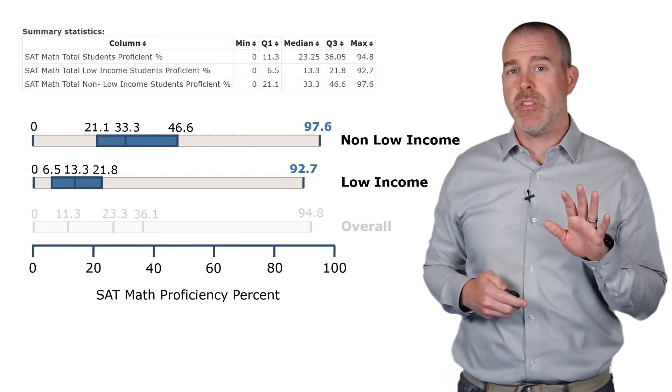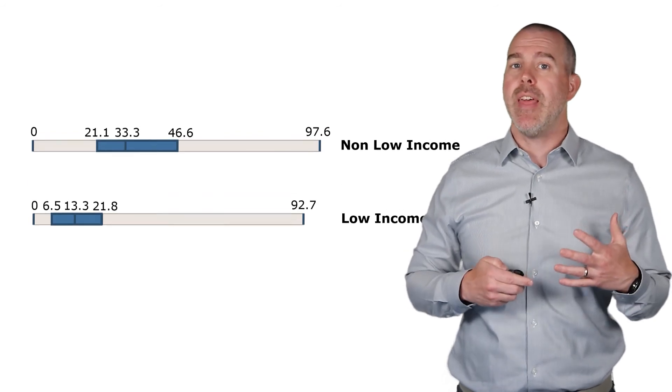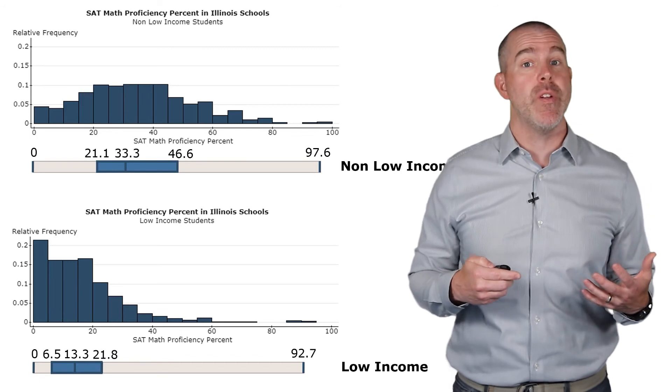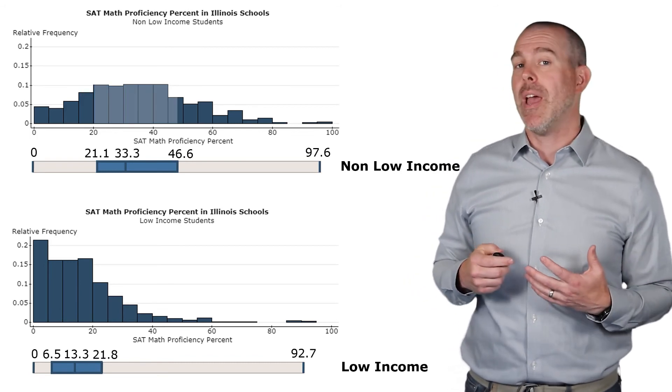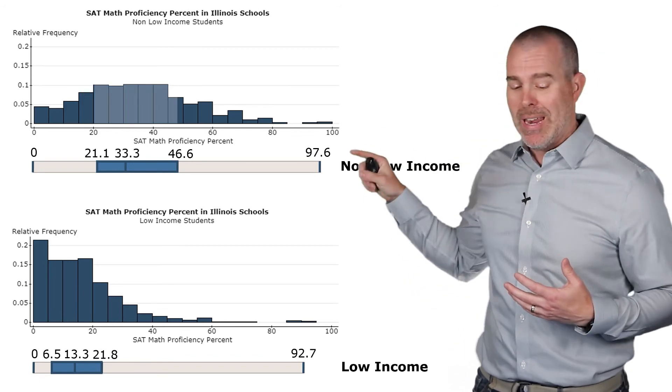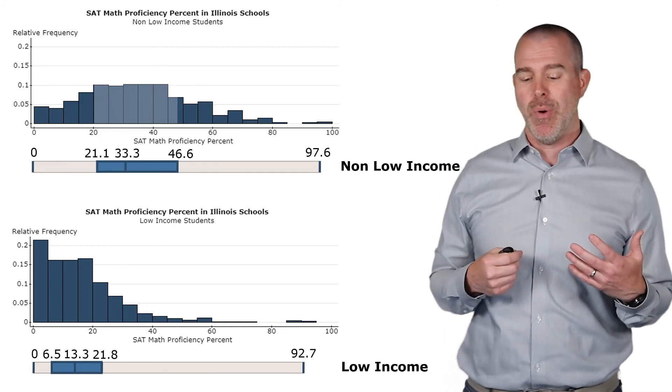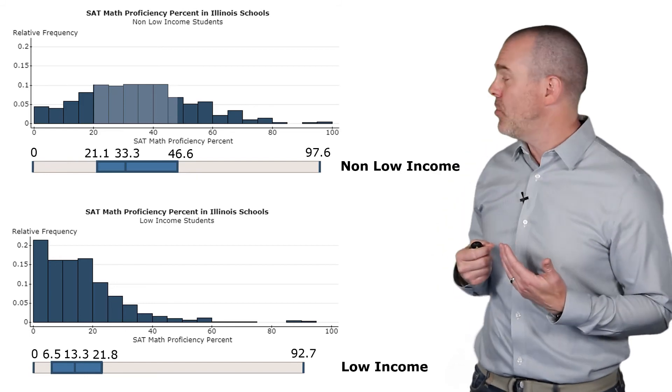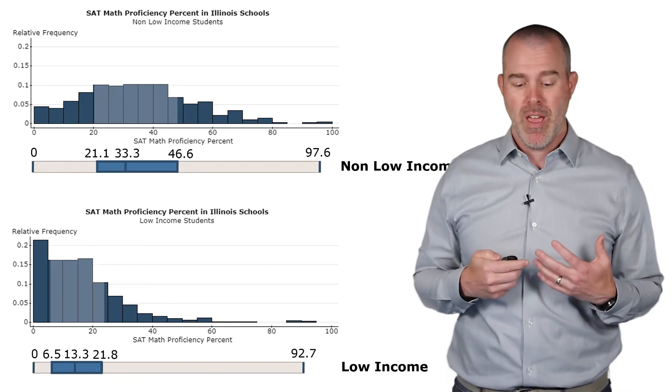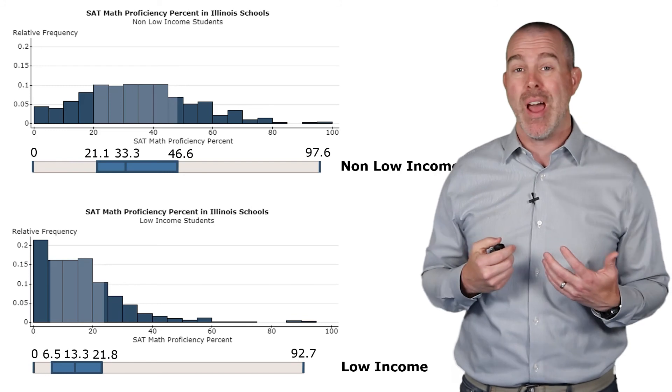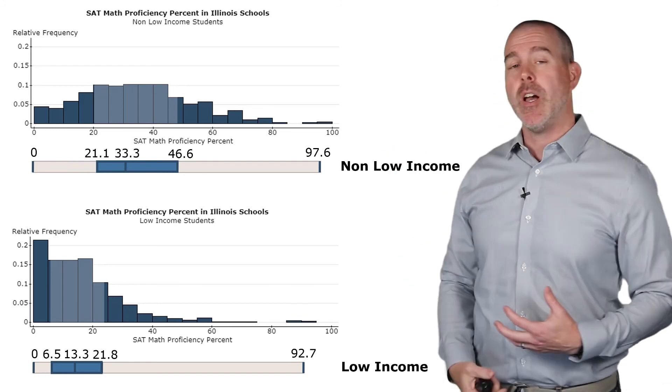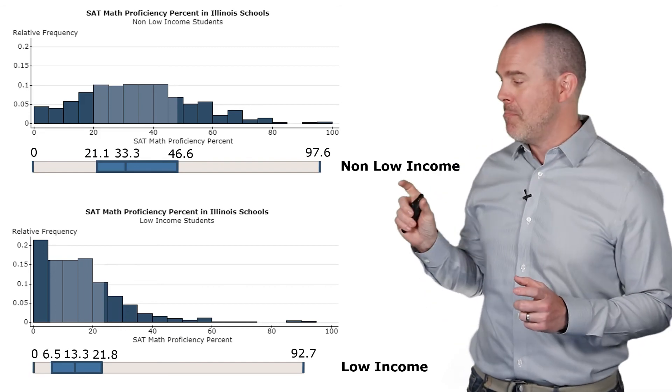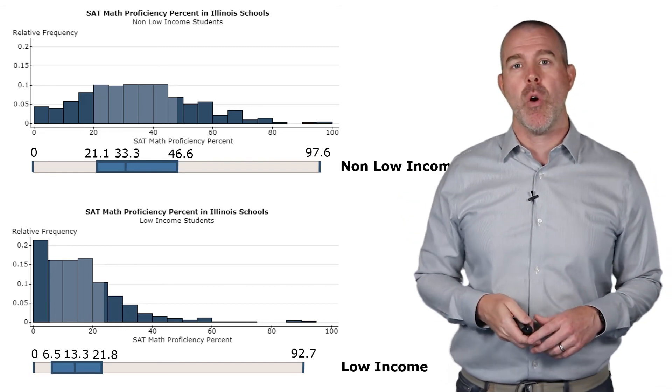Let's see what this looks like on the histogram and see that connection. If we add those two histograms, you can see the distribution is very different. If you look at that middle 50 percent, that's between 21.1 and 46.6 for students who are not low income. Look at the distribution for those who are low income. Much different, very concentrated, very right skewed. The non-low income are right skewed as well, but the low income students are very right skewed. You can see that middle 50 percent is much more over to the left.